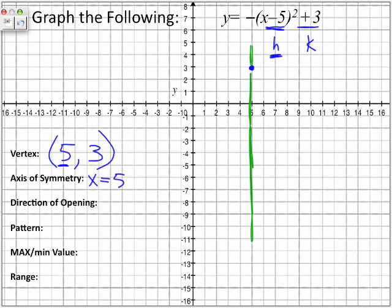In terms of the direction of the opening, what is the a value? The a value is a negative value. So the parabola will be opening down, because a is negative.